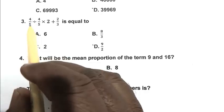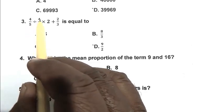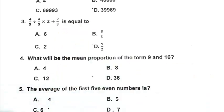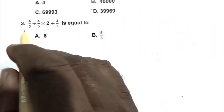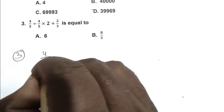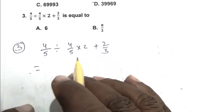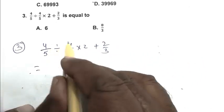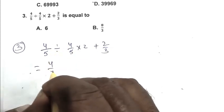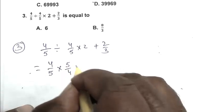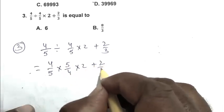Question number 3: (4/5) ÷ (4/5) × 2 + 2/3 is equal to. We first write the expression: 4/5 ÷ 4/5 × 2 + 2/3. From BODMAS rule, we divide first. So 4/5 × 5/4 × 2 + 2/3.